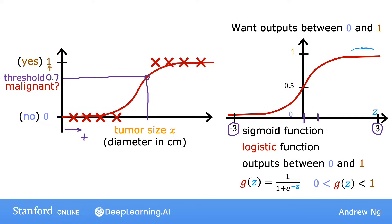Notice if z were really big, say 100, e to the negative z is e to the negative 100, which is a tiny, tiny number. So this ends up being 1 over 1 plus a tiny little number, and so the denominator will be basically very, very close to 1, which is why when z is large, g of z, that is the sigmoid function of z is going to be very close to 1.